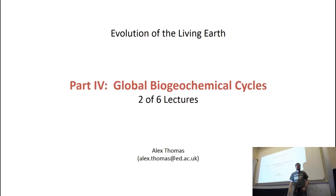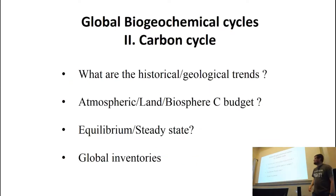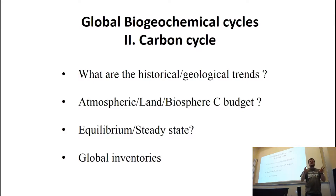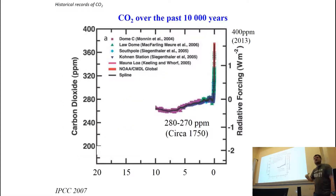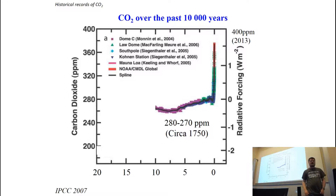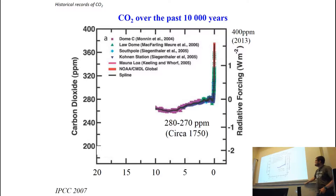Today's lecture on biogeochemical cycles — we're going to be looking at the carbon cycle, looking at what are the historical trends, and trying to put numbers on some of these fluxes and reservoir sizes to explain some of the trends we're seeing. We're going to be focusing on the land carbon cycle this time. This is basically what we're trying to explain — the carbon dioxide concentration measured by actual measurements of the atmosphere in red and also from ice cores.